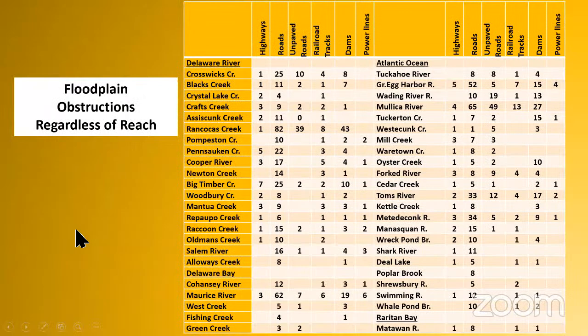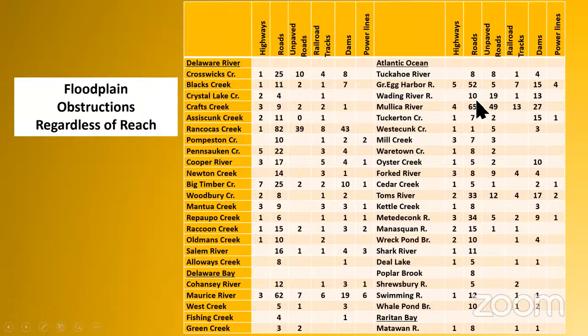Streams were obstructed to some degree regardless of the reach. Roads, highways, and electric lines all cross floodplains and interfere with flow. Looking at all these watersheds, every stream has some kind of interference from road work. In a sense, there are no wild streams in New Jersey. There are two designated as wild streams by the federal government, but those are only small reaches that have been mildly impacted — most have been majorly impacted.